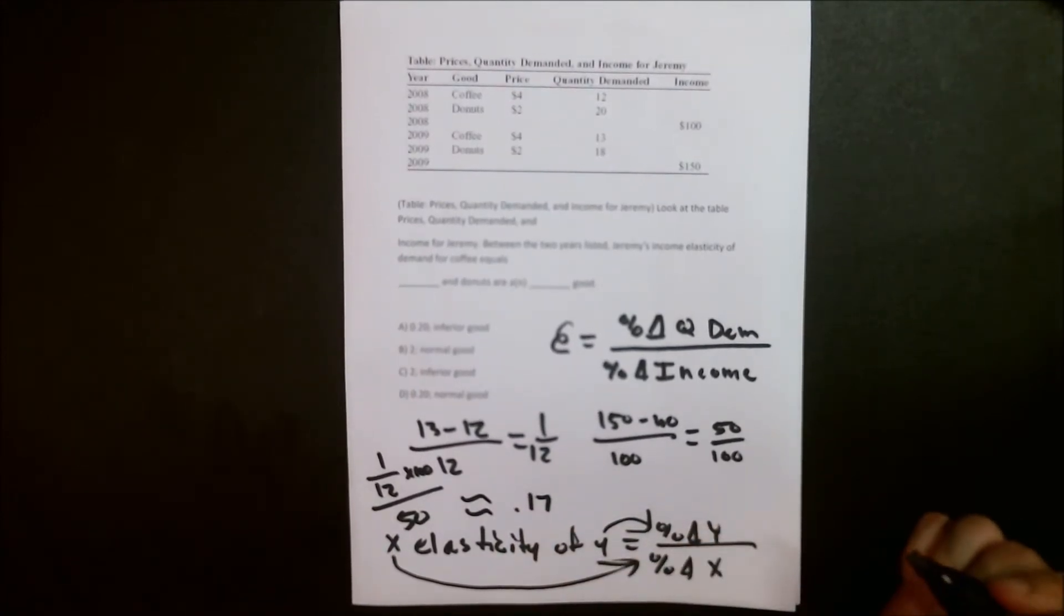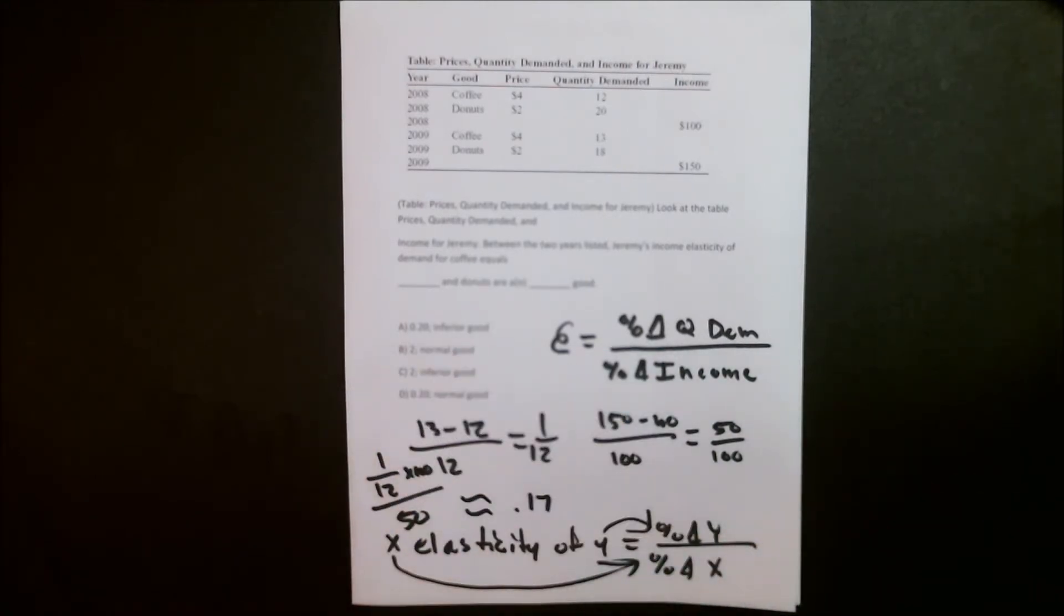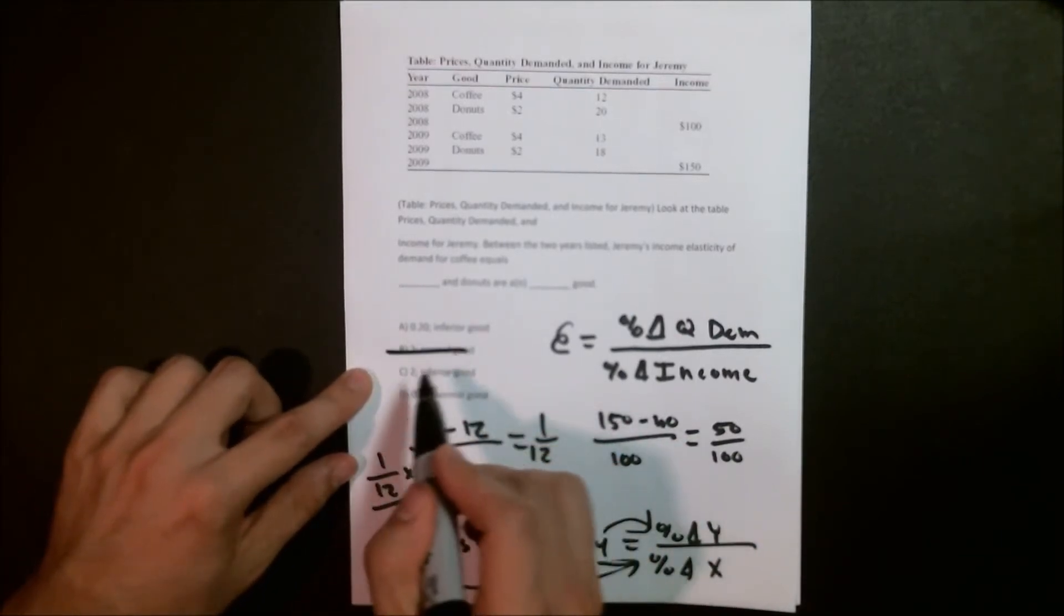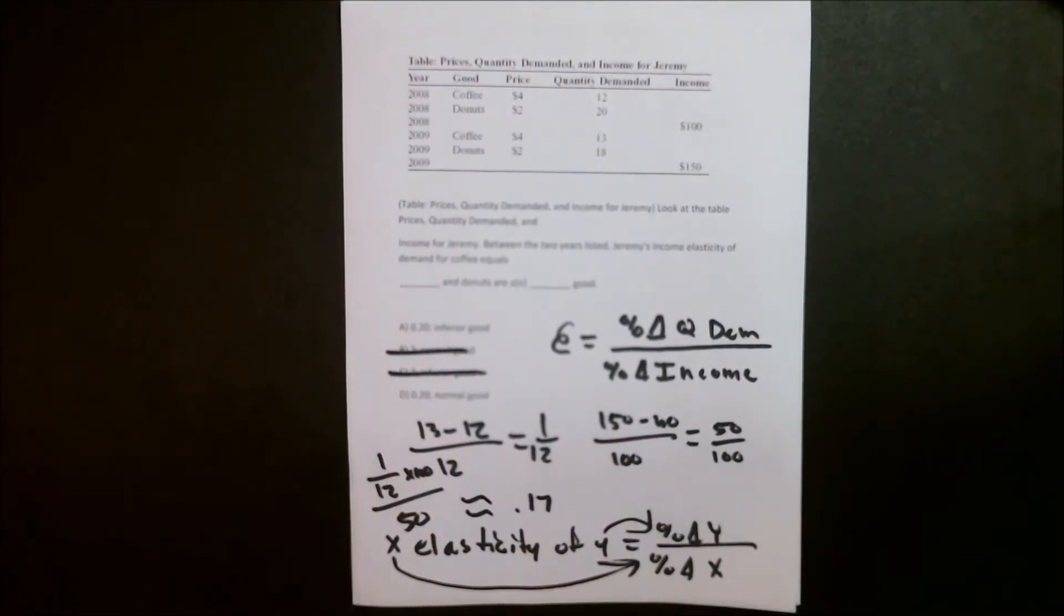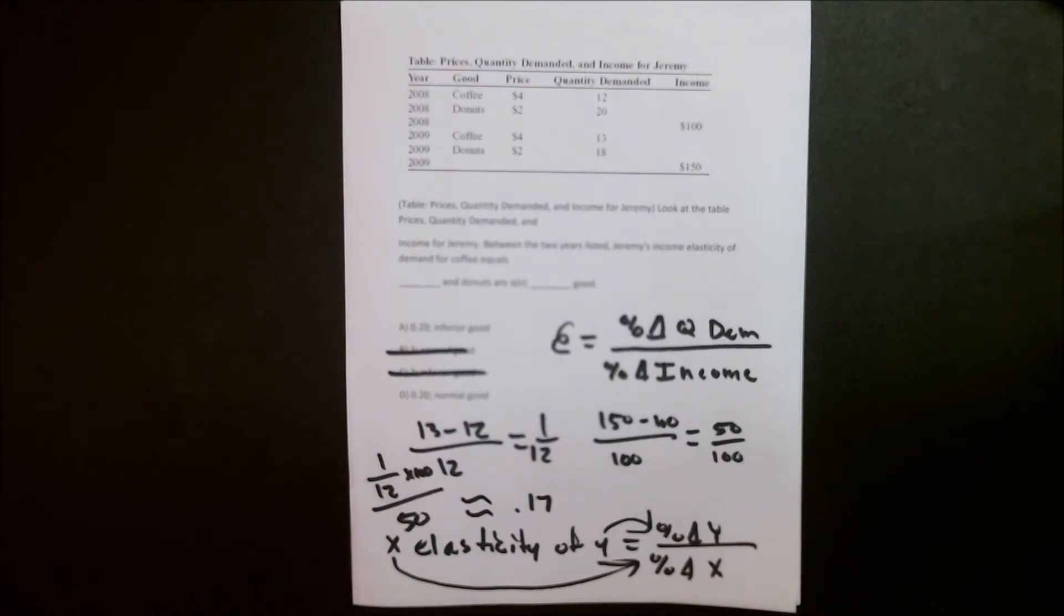That gives us our answer for coffee. The income elasticity demanded for coffee equals 0.2. Right now, we can cross off these two potential answers. Now, we have to talk about something else, because the question continues to go, and donuts are a blank good.